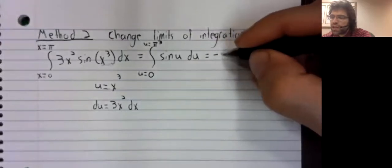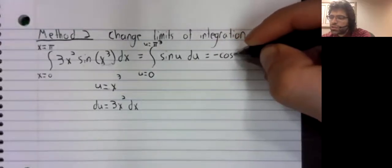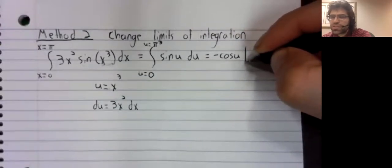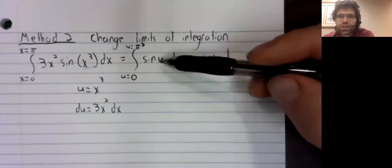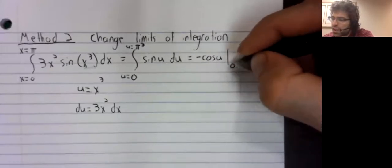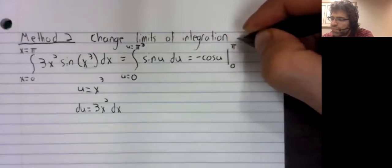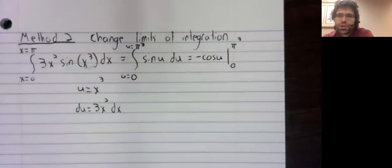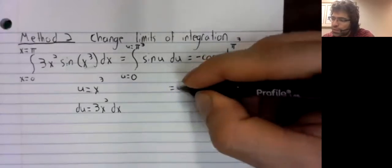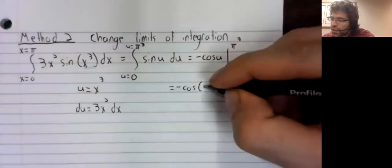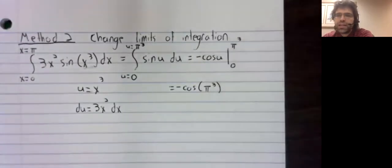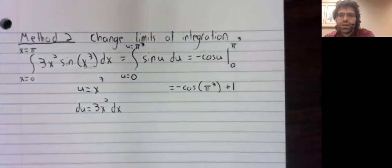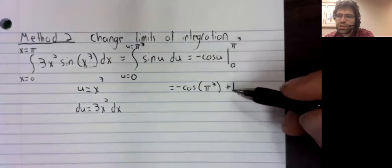The antiderivative of the sine, and you see we're not converting back to x's now. This is a definite integral, we can just take it. The antiderivative of the sine is the negative cosine. We are evaluating from zero to pi cubed. So the negative cosine of pi cubed minus the negative cosine of zero or negative minus one, so plus one.